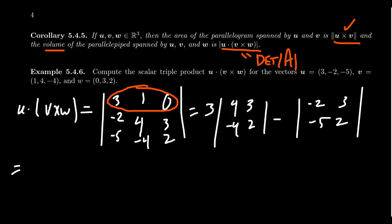When you do those two by two minors, 3 times you end up with 8 plus 12, and then minus we're gonna get -4 plus 15. 8 and 12 of course is 20, times that by 3 we get 60.